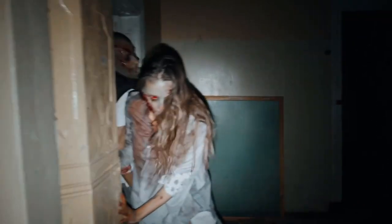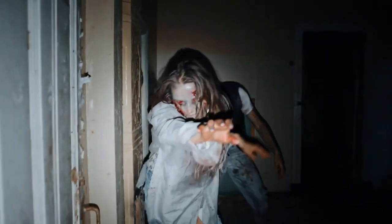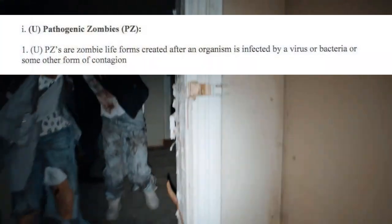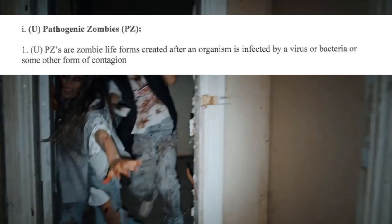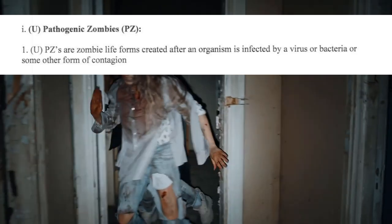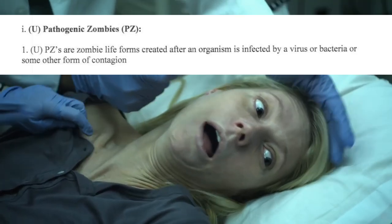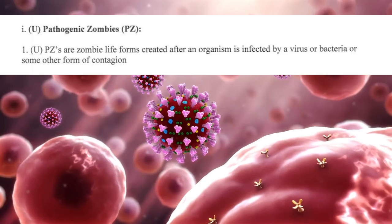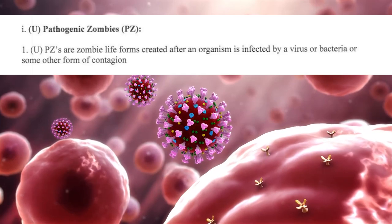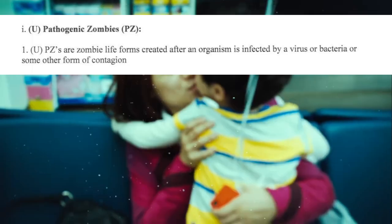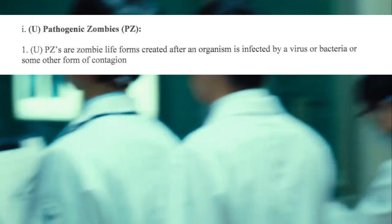This document describes various types of zombie threats. Pathogenic zombies, PZ, are zombie lifeforms created after an organism is impacted by a virus, bacteria, or other form of contagion.